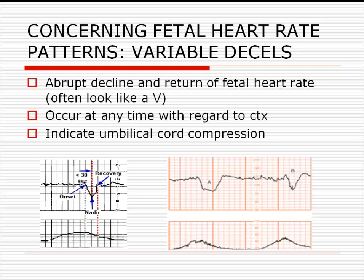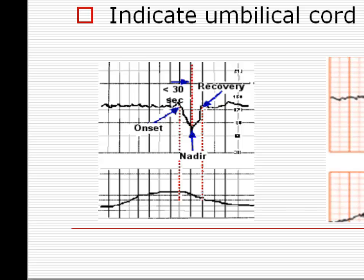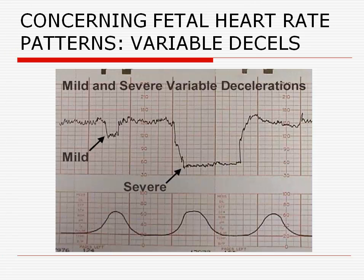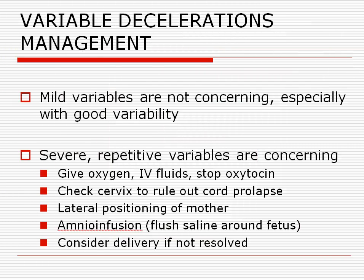The next type of fetal heart rate deceleration is a variable deceleration. These occur when the umbilical cord is compressed in utero. Fetal circulation through the umbilical cord ceases during compression, so fetal blood pressure changes as well as fetal oxygenation. These changes lead to an abrupt fetal heart rate deceleration that resolves just as quickly when compression of the umbilical cord is released. Because the umbilical cord can be compressed at any time, variable decelerations do not necessarily correlate with uterine contractions. If the cord is compressed only briefly, a mild variable will occur; if compressed for a long time, the variable can be more severe. Severe variable decelerations are worrisome for insufficient oxygenation of the fetus, and corrective measures should be taken. Here are suggestions for the management of variable fetal heart rate decelerations.